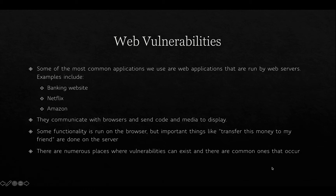Web vulnerabilities are one of the most common set of vulnerabilities because they belong to the most common set of applications exposed on networks. Examples include banking websites, streaming applications like Netflix, and e-commerce sites like Amazon. Internally, we use things like the LMS, Calista, student management systems, and accounting systems — all available sometimes publicly and through internal networks. Web applications communicate with browsers and send code and media to display, with some functionality running on the browser itself, such as JavaScript, which then communicates with the server to carry out actions like transferring money.